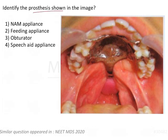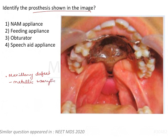Identify the prosthesis shown in the image. Here we have an image of a maxillary defect covered by a metallic and acrylic plate which looks like a denture, and then there is an extension of this into the soft palate.